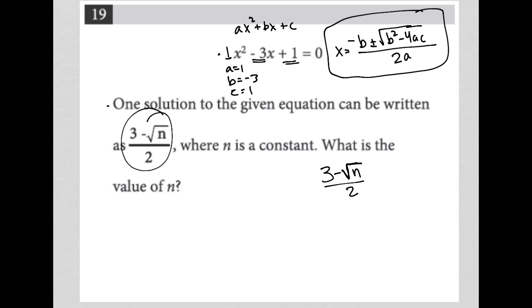Putting this information into the quadratic formula, x equals negative b—but since b is already negative 3, that becomes positive 3—plus or minus the square root of b². Negative 3 squared is 9, minus 4 times a, which is 1, times c, which is also 1, all over 2a, which is 1.